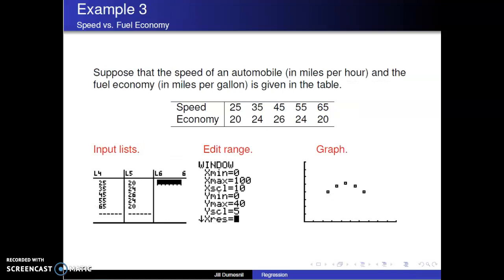Let's look at two more examples. In example 3, suppose we have the speed of an automobile in miles per hour and the associated fuel economy in miles per gallon in the given table. To begin our investigation of whether these variables are related, we input the given values in LIST4 and LIST5. We adjust the viewing window to cover the values given and hit GRAPH.